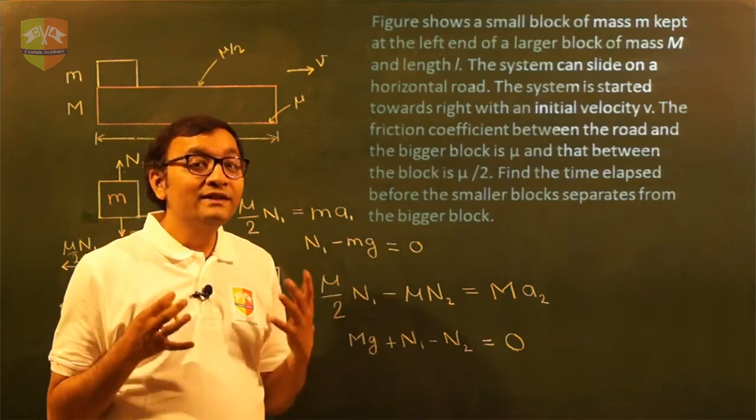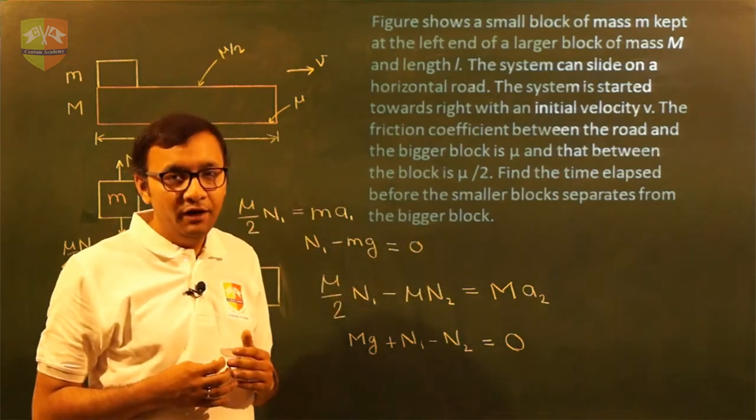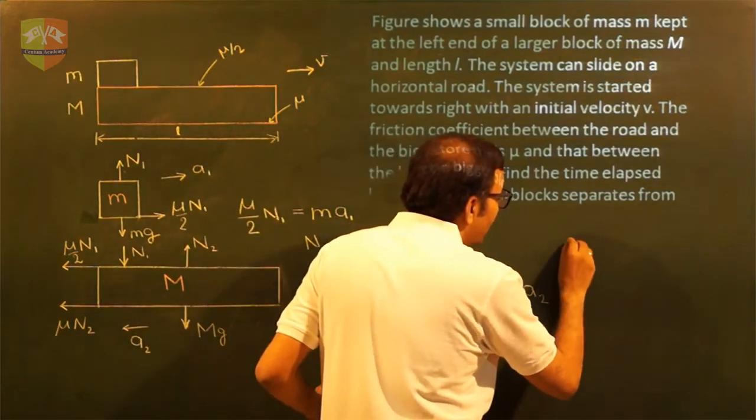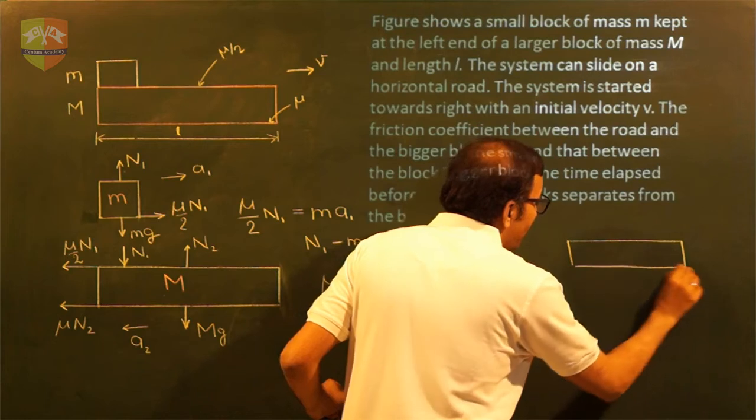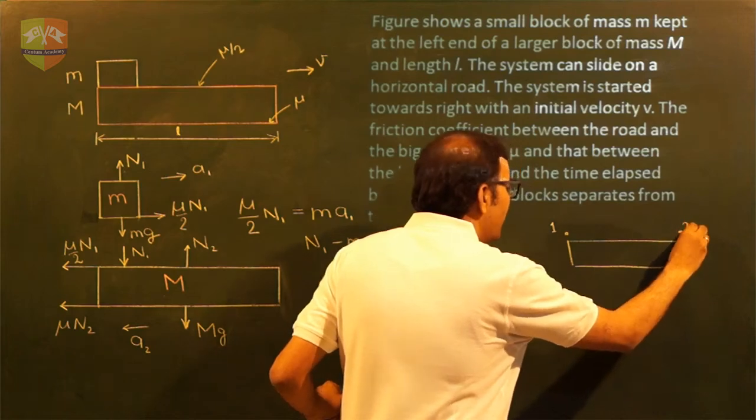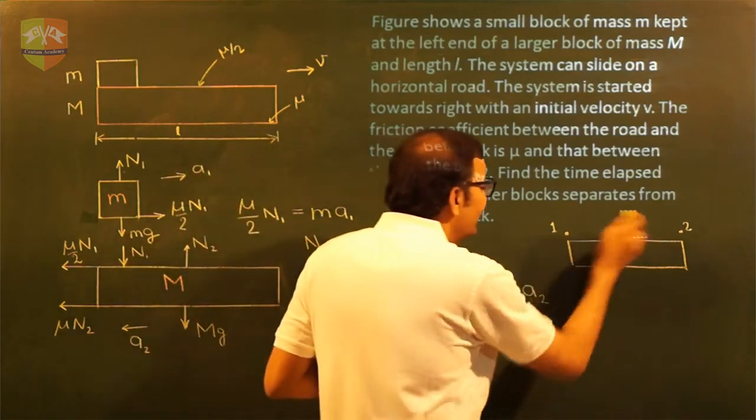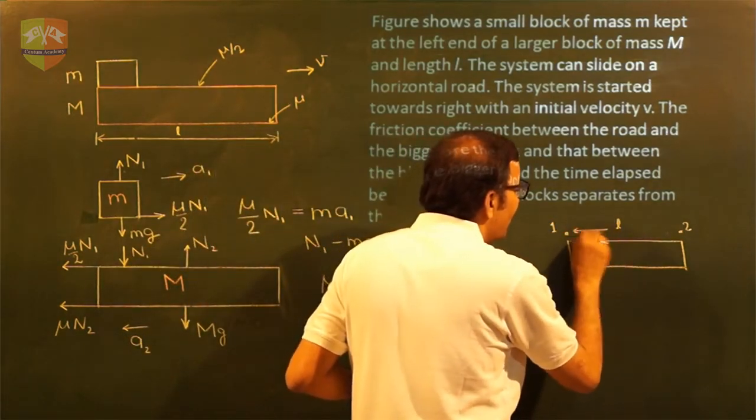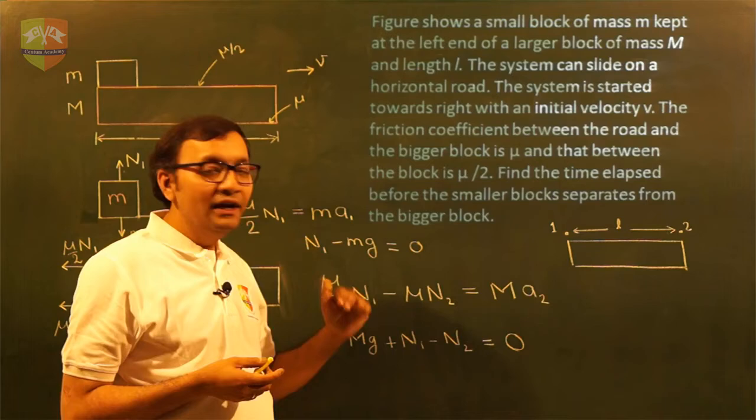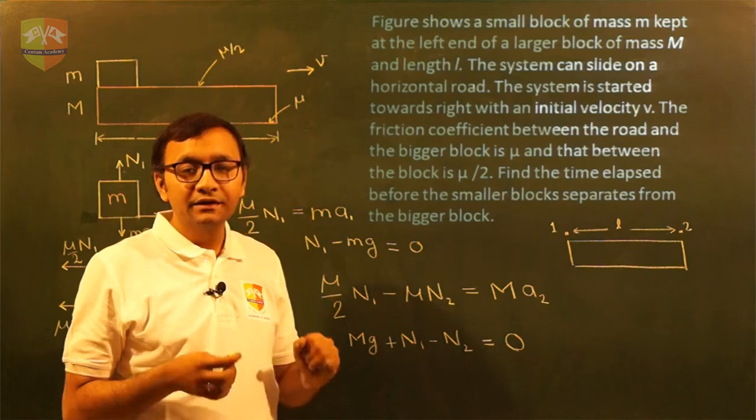Now the question says how much time it takes for this small m to topple from the capital M? Now if we see the motion of small m, it goes from this end point number 1 and it must cross this point number 2 to topple over. So the total length it covers is L. Now is this length an actual length or it is a relative length compared to or with respect to capital M? It is a relative displacement.